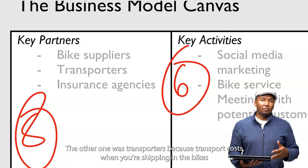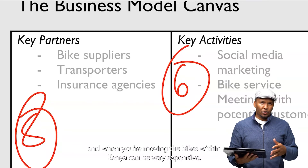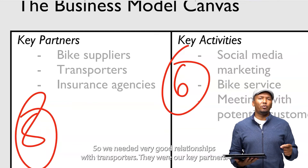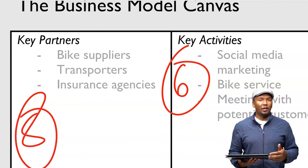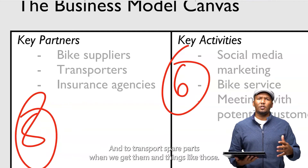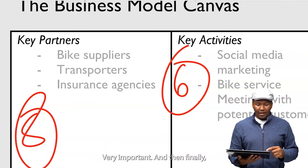The other key partner was transporters, because transport costs when you're shipping in bikes and when you're moving bikes within Kenya can be very expensive. So we needed very good relationships with transporters — they were our key partners who could help us transport the bikes around and transport spare parts when we get them.